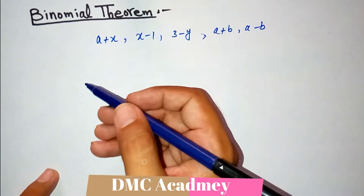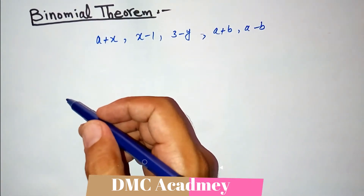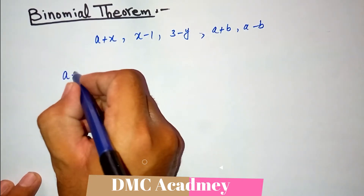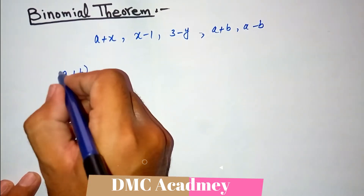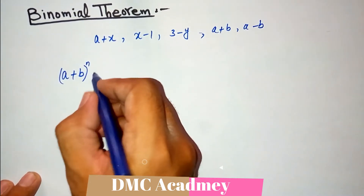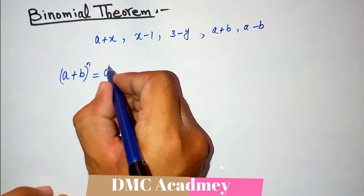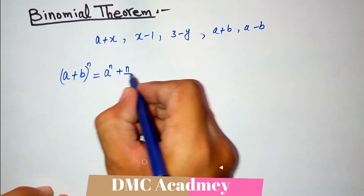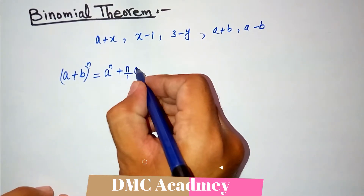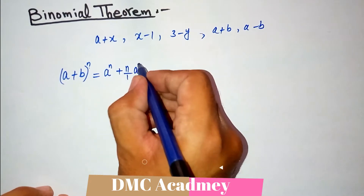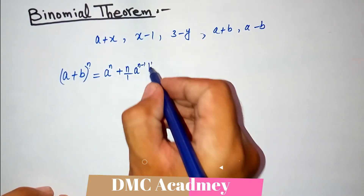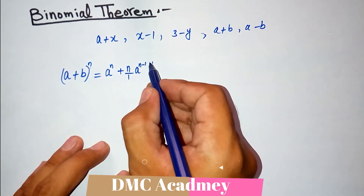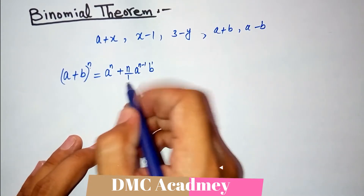So now let us see how the binomial theorem works. Let us say we have a plus b whole raised to power n. So it gives us a raised to power n, plus n divided by 1, times a raised to power n minus 1, and b raised to power 1. If you add both the powers — n minus 1 plus 1 — they cancel to give you n.